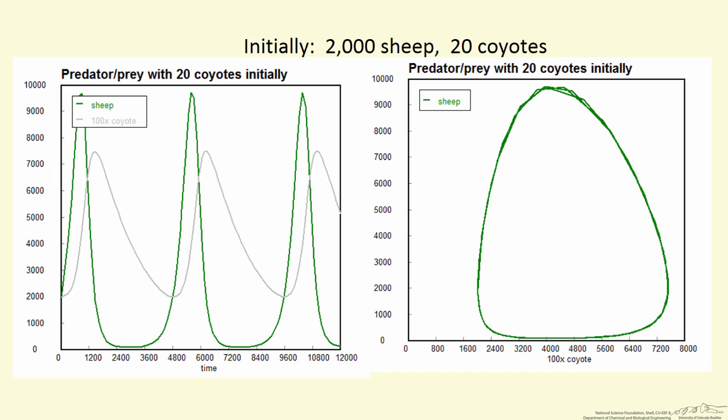We see a much larger number of sheep, almost up to 10,000. Notice we get down very close to 0 - the coyotes eat almost all the sheep, then the coyote population starts dying off, and the sheep recover.